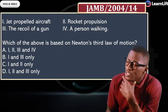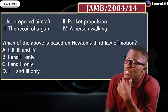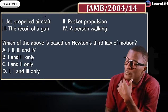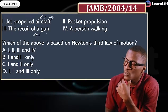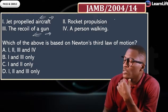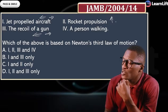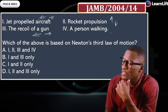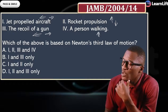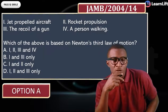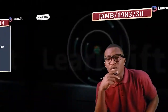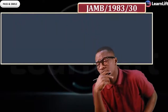All four are based on action and reaction: as the jet moves forward there is a reaction pulling back; the bullet moves forward and the recoil goes backward; the rocket goes up and the exhaust comes down; and as the person's weight pushes down, the ground pushes back up. So all four — option A — is the correct answer.